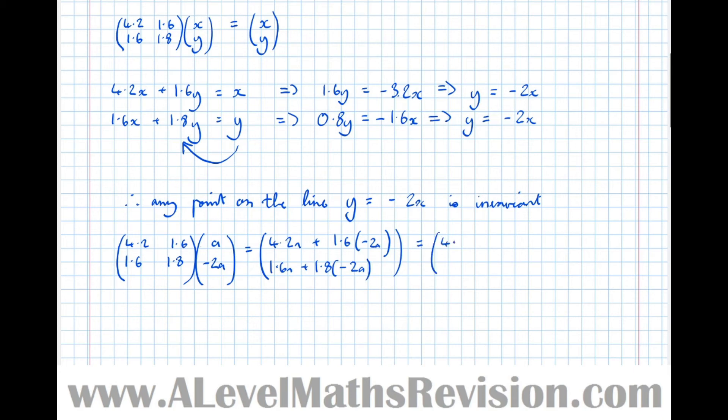4.2a take 3.2a is the top. Then 1.6a take 3.6a equals (a, minus 2a). We've just shown that any vector where the y component is minus 2 times the x component, when we apply this matrix to that, the point is invariant. We get the same point back.